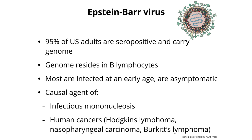Another herpes virus — same family — Epstein-Barr virus, another virus that infects many people. 95% of U.S. adults are seropositive and carry the genome in B lymphocytes. Most individuals get infected at an early age — it happens in college. First year of college, you get infected. You can be asymptomatic or you can get mononucleosis — you feel tired, a little febrile, you don't feel like studying or going to classes. It's also called the kissing disease. The infection can also lead to human cancers like Hodgkin's lymphoma, nasopharyngeal carcinoma, and Burkitt's lymphoma. The virus persists, and in some cases causes cancers.